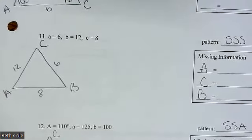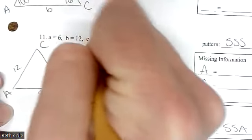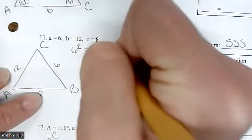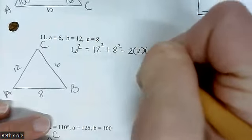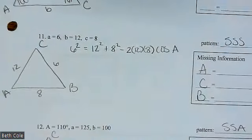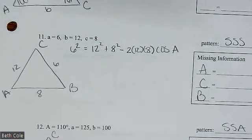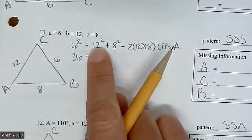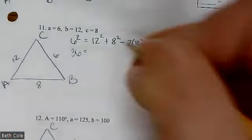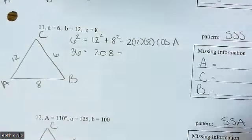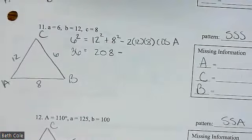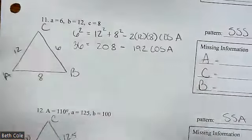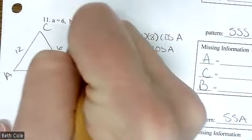Working through the Law of Cosines: 6² is 36, 12² is 144, 8² is 64. So 144 + 64 = 208, and 2 × 12 × 8 = 192. That gives 36 = 208 − 192·cosA. Subtract 208 from both sides — yes, it comes out negative, and that's fine because there's a negative on both sides and they cancel. I got −172 equals −192·cosA, then divide by −192. Use inverse cosine: second cosine of 172 over 192. Store that as A.